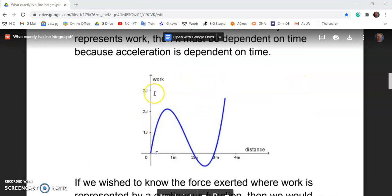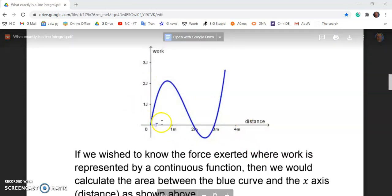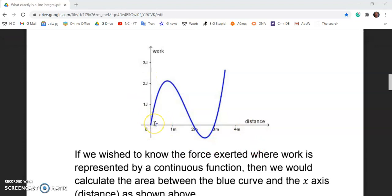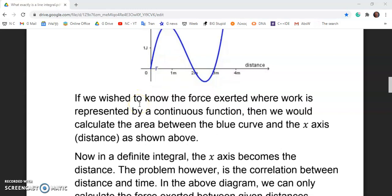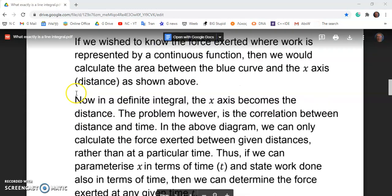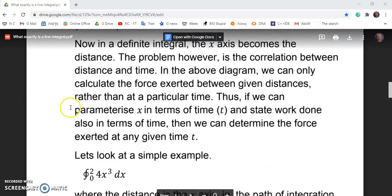So now, if we take a look at this graph here, we see it's a graph of work against distance. And this is typically how the line integral is realized. We want to calculate the area under this curve, but we have to do certain things first. We can't just go ahead and do it because the x axis becomes the distance in a definite integral.